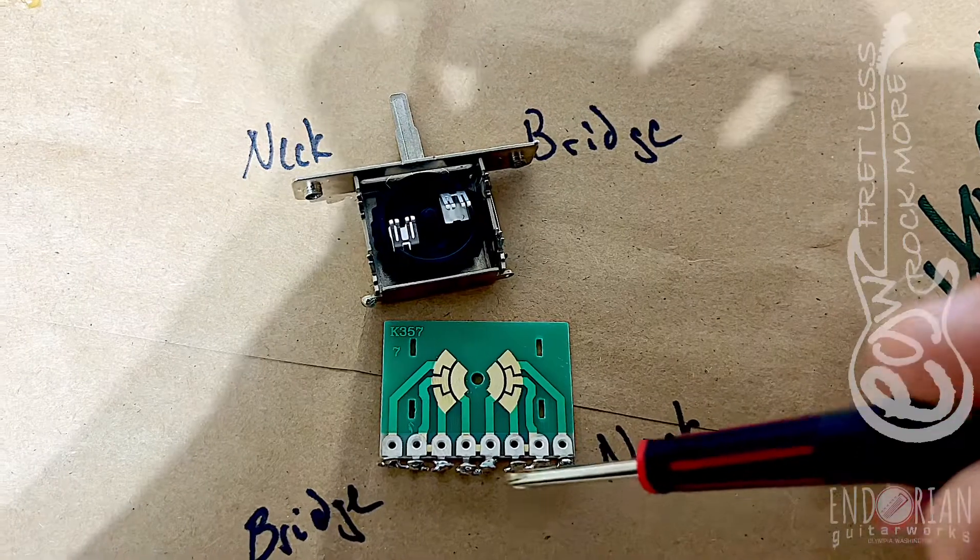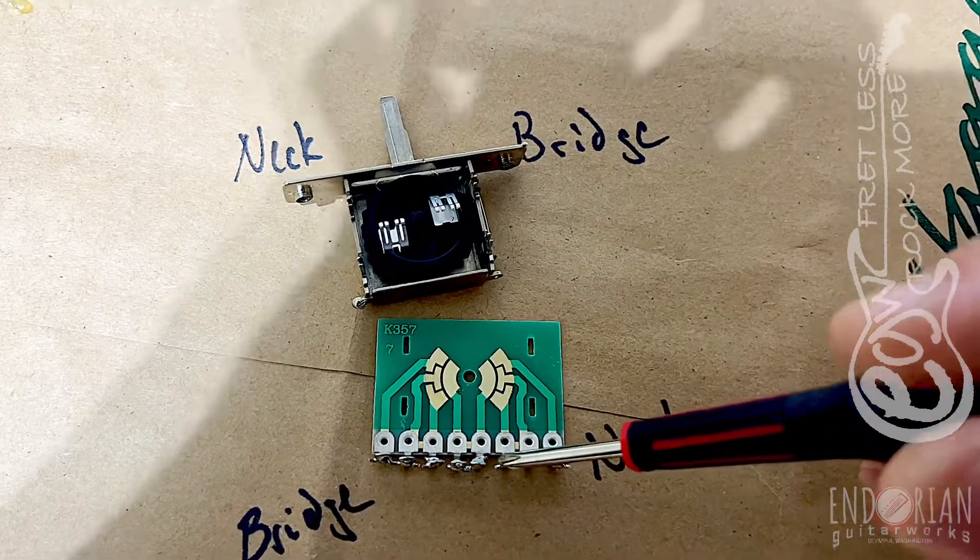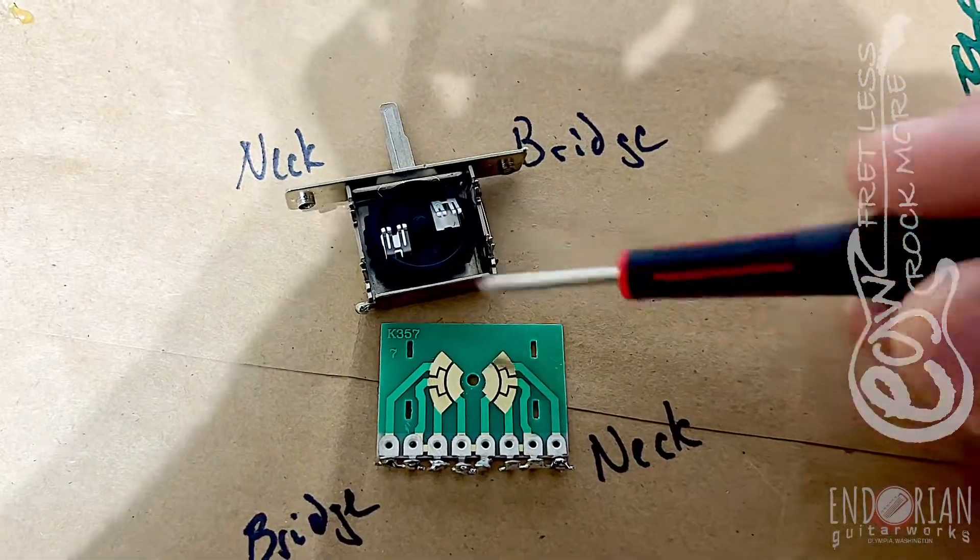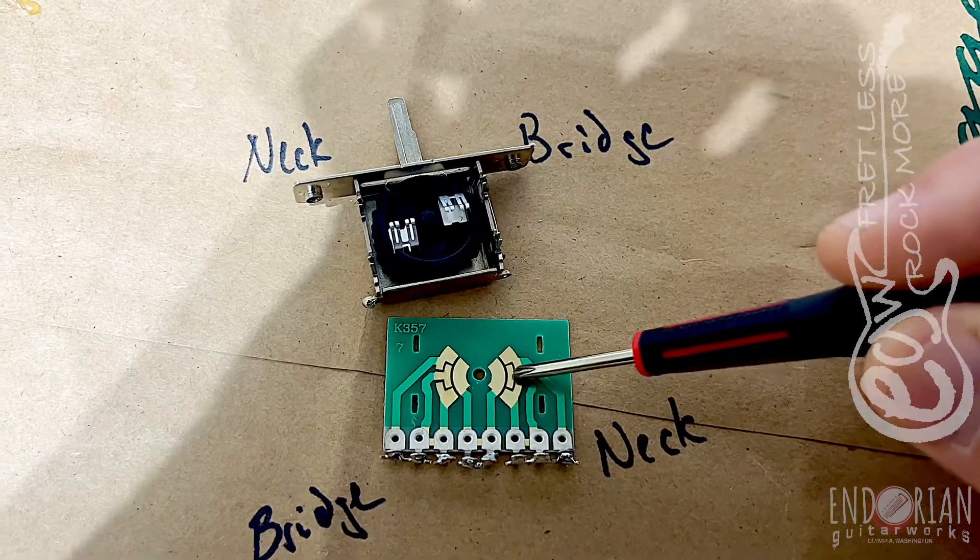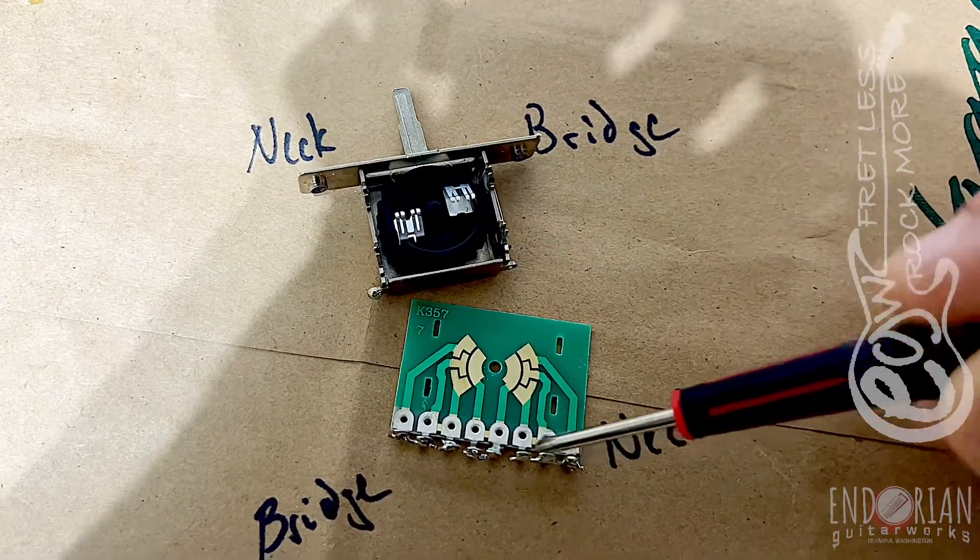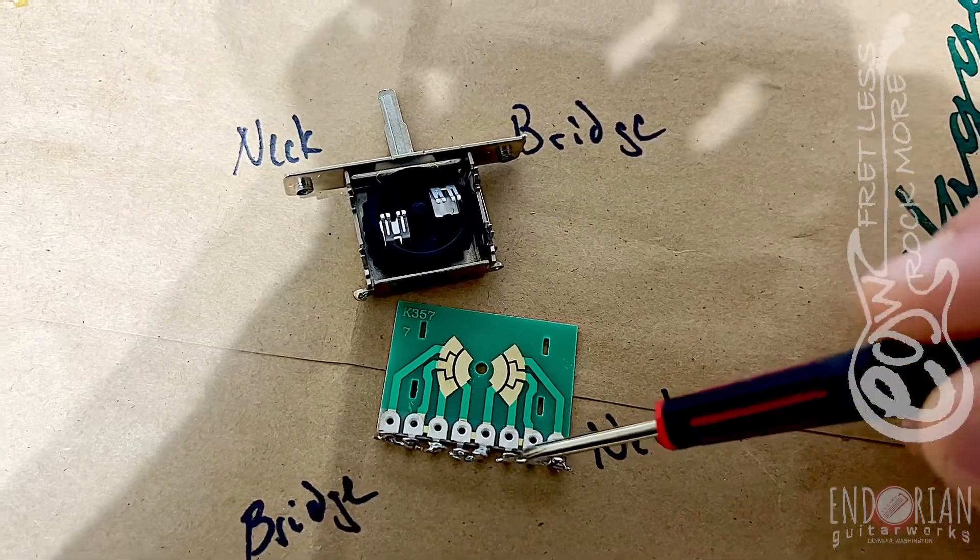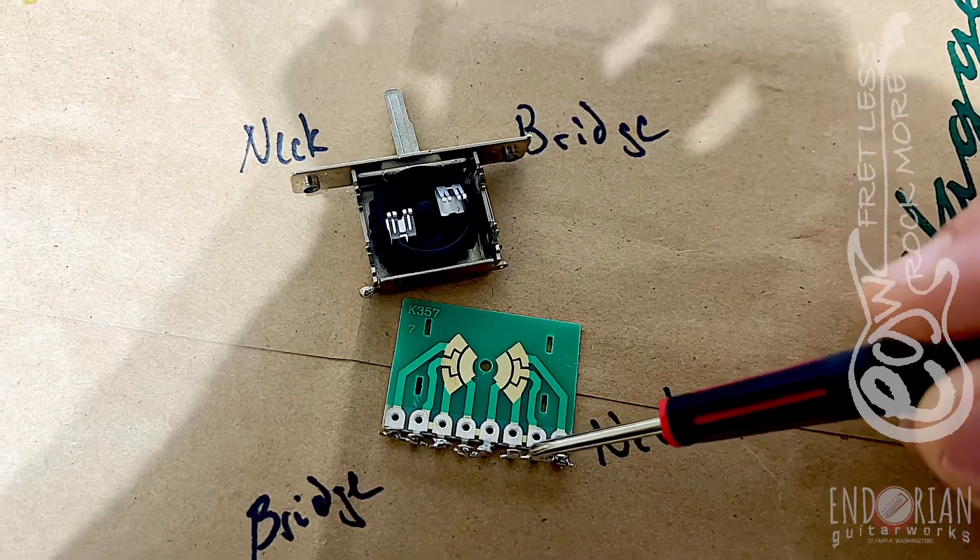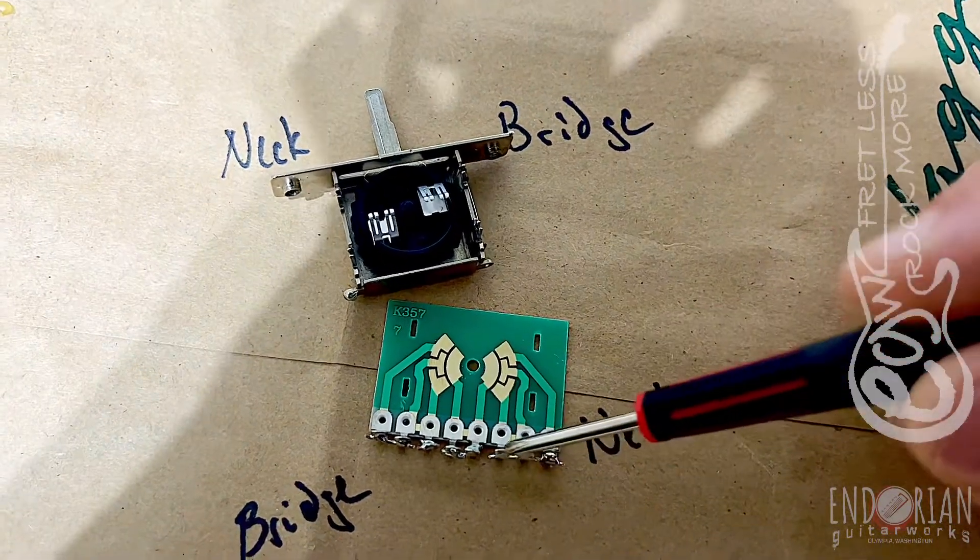The way that's going to happen is your neck pickup is being wired into here, but your jumper is in the middle position. Well, how do we fix that? You jump it across over here. So your pickup comes in here, but you have a wire stretched from here to here and soldered in place. That will send the tone from here to here, into here, across the jumper, and to the output.